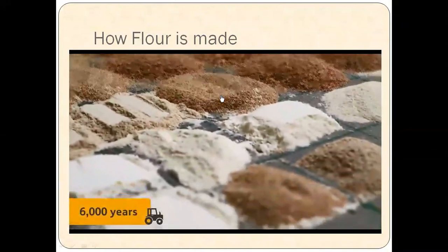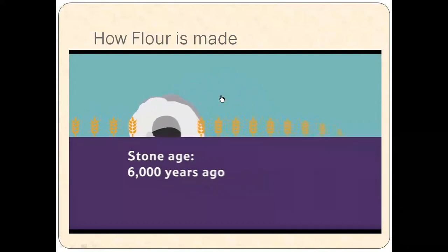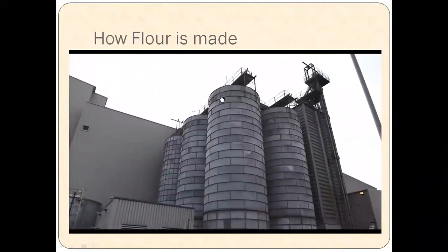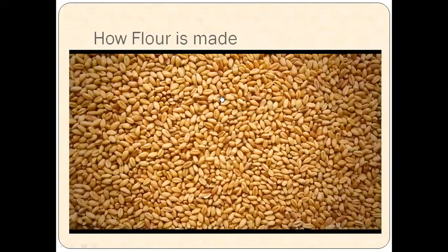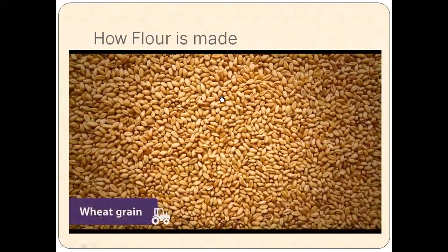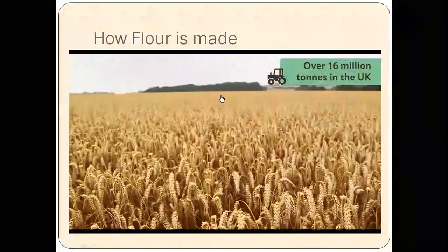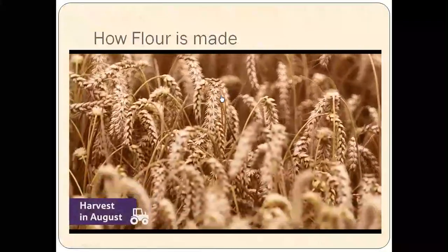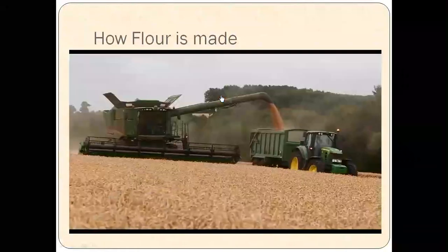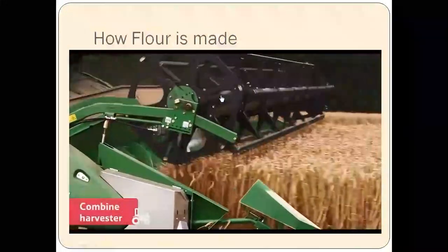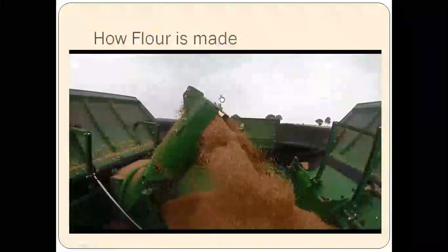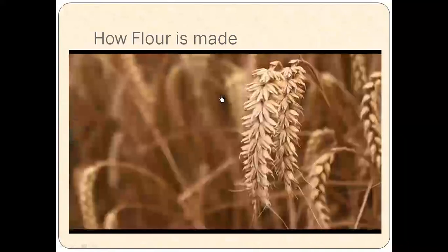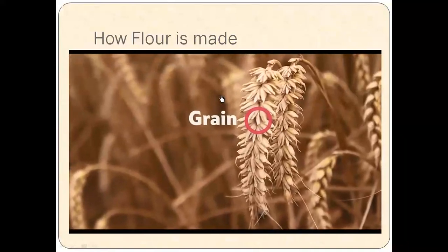We've been making flour for at least 6,000 years. Stone age people took grain and crushed it between two stones. Although modern flour mills are very big and make thousands of tons of flour every day, the process really isn't that different. To make flour you need grain — most flour that we use for bread is made from wheat grain. We grow over 16 million tons of wheat in the UK. It's usually planted in the autumn and grows throughout winter, spring and summer, ready for harvest in August. The farmer harvests the wheat using a machine called a combine harvester. Then the grain is taken to the mill, ready to be ground into flour. Each grain of wheat is a seed, which would grow into a new wheat plant if it were put into the soil.